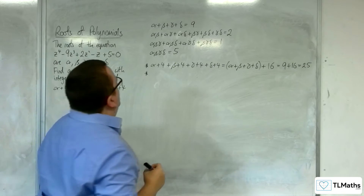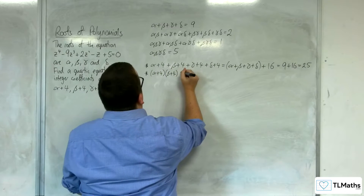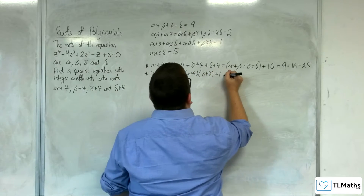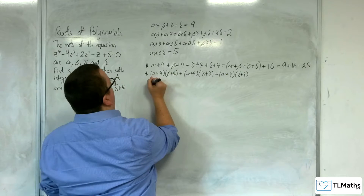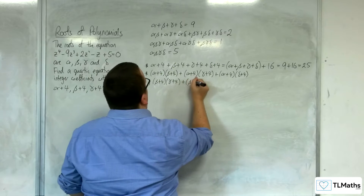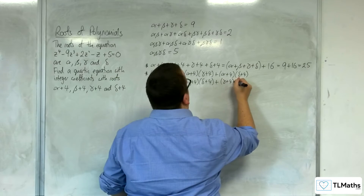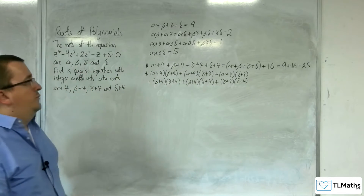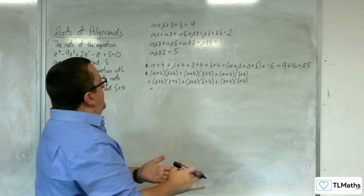Then we've got the sum of products of pairs: (alpha+4)(beta+4) + (alpha+4)(gamma+4) + (alpha+4)(delta+4) + (beta+4)(gamma+4) + (beta+4)(delta+4) + (gamma+4)(delta+4). I've got to expand all those brackets — I'm a glutton for punishment, clearly.